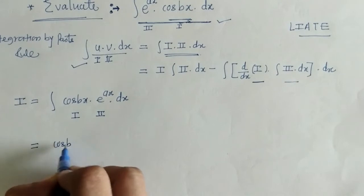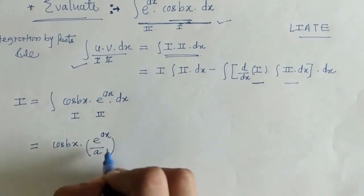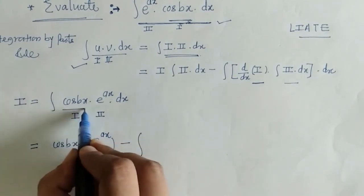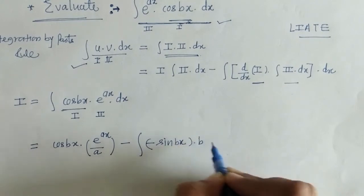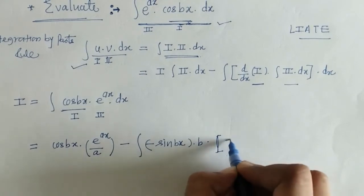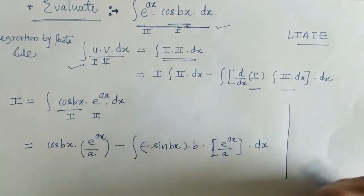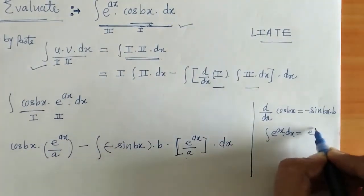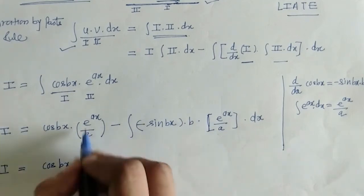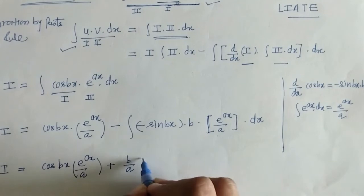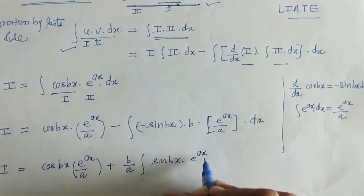The first function cos(bx) multiplied by the integral of the second gives e^(ax)/a, minus the integration of the derivative of cos(bx) — which introduces a factor of b — times the integral of e^(ax). We simplify and take b/a outside as it is a constant. Remaining here we have sin(bx) into e^(ax).